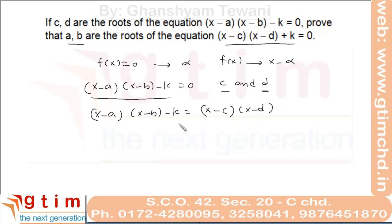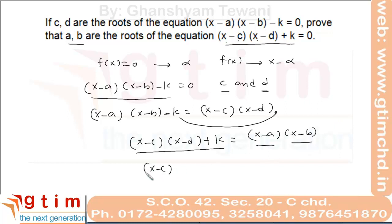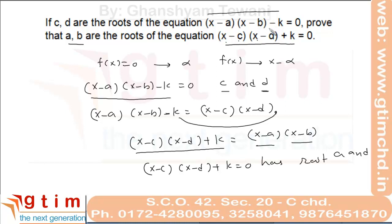We want the roots of x minus c times x minus d plus k equal to 0. We can see that k can be shifted, so we get x minus c times x minus d plus k equal to x minus a times x minus b. This is a quadratic function with factors x minus a and x minus b, so the equation has roots a and b. This is how we correlate the factors of an expression or function to the roots of its corresponding equation.